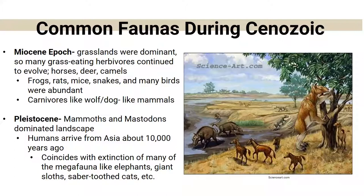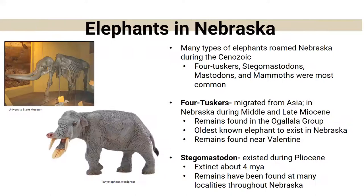In the Oligocene, mammal diversity reached its peak with large terrestrial herbivores, and primates including monkeys began to diversify. In the Miocene, grasslands were again dominant, with very large grass-eating herbivores: horses, deer, camels, frogs, mice, snakes, and birds. There were also carnivores, including a wolf-dog-like mammal we'll talk about shortly. In the Pleistocene, you find mammoths and mastodons. Humans also arrived from Asia about 10,000 years ago, coinciding with the extinction of megafauna like elephants, giant sloths, and saber-toothed cats.